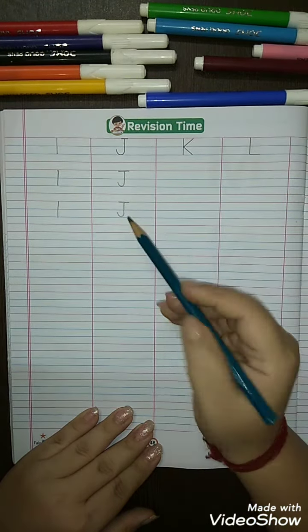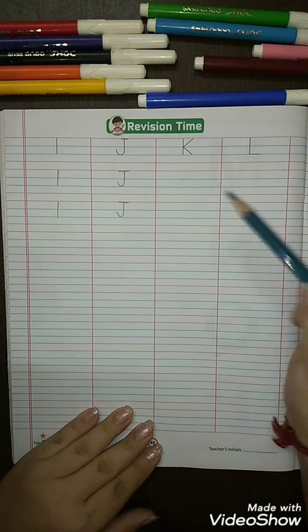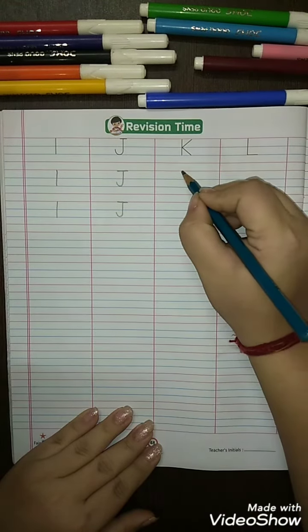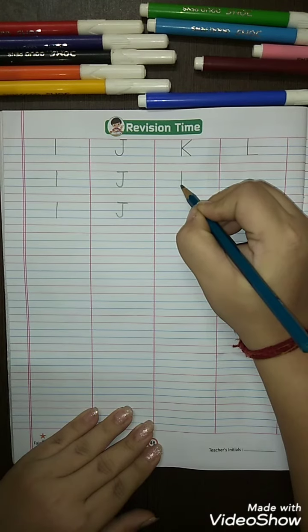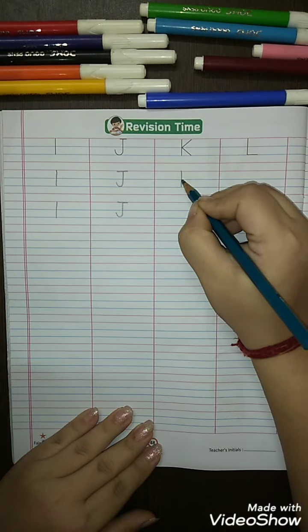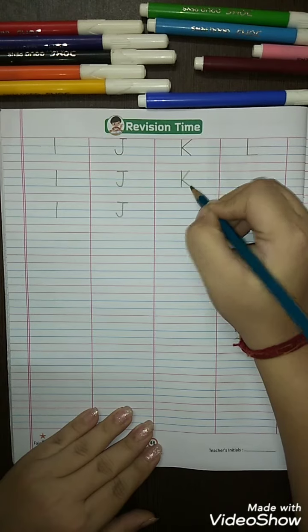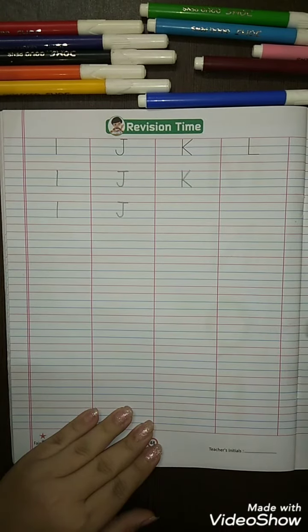Now K for kite. Make a standing line, then make a slanting line and make another slanting line. K, K for kite.